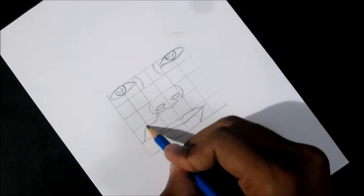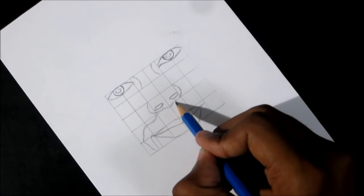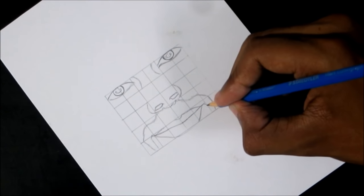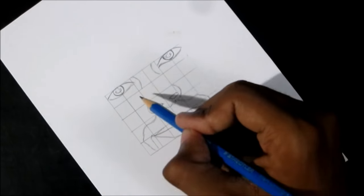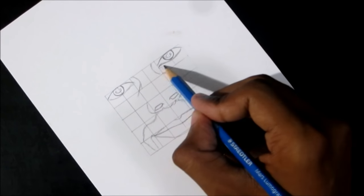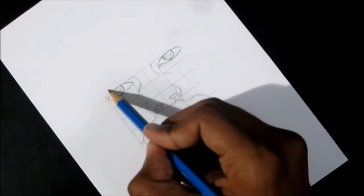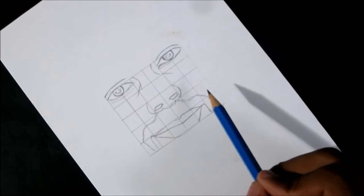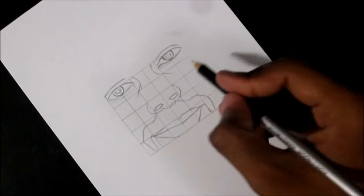Draw the mustache like this. Now you can erase the grid lines.